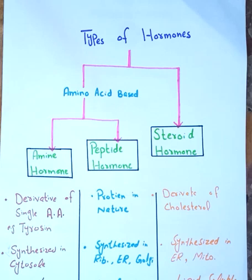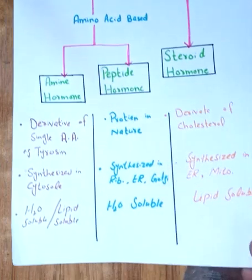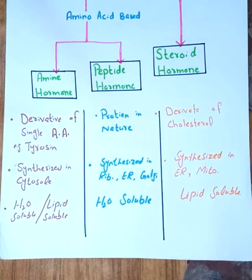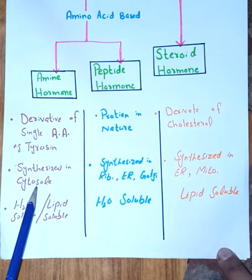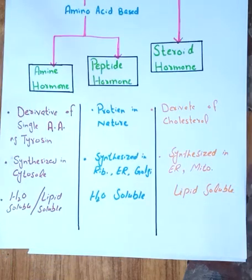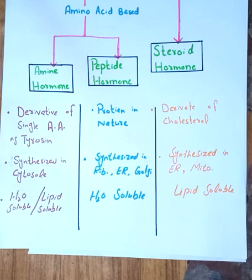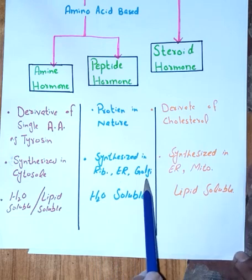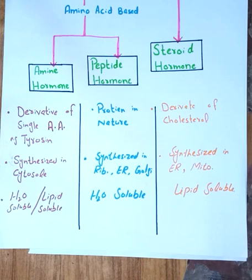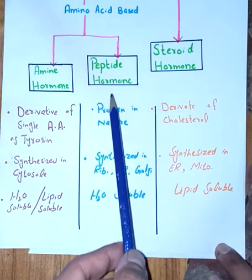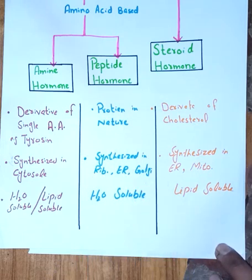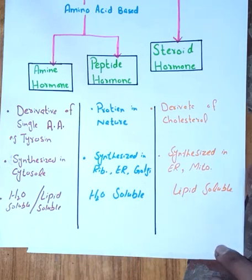All these types will be discussed individually in the upcoming videos in very detailed manner. Now let's talk about synthesis. Amine hormones are synthesized in the cytosol. Peptide hormones are protein in nature, and proteins are formed through translation on the ribosome. Amino acids are joined, then sent to the endoplasmic reticulum for post-translational modification, then to the Golgi apparatus for further modification and packing.